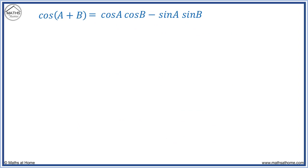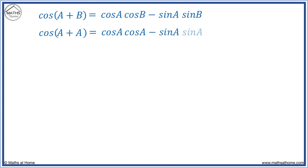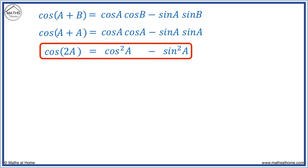Using the compound angle formula with b replaced by a, we get cos(a + a) equals cos(a)cos(a) minus sin(a)sin(a). This simplifies to cos(2a) equals cos²(a) minus sin²(a). This is the double angle formula for cosine.